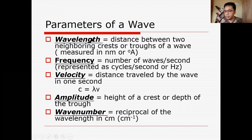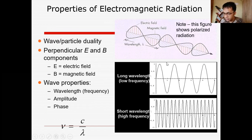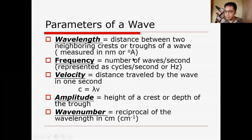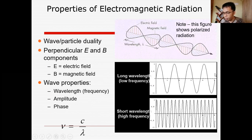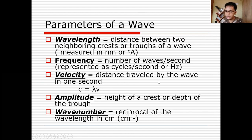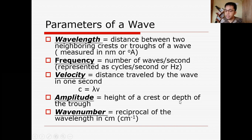What are the parameters of a wave? Wavelength is the distance between neighboring crests or troughs of a wave. Frequency is the number of waves per second, measured in hertz. Velocity is the distance traveled by the wave in one second, given by the formula c = λν. Note that c is a constant with a value of 2.998 × 10⁸ meters per second — that is the speed of light. Amplitude is the height of the crest and depth of the trough. Wave number is just the reciprocal of wavelength, usually expressed in cm⁻¹.